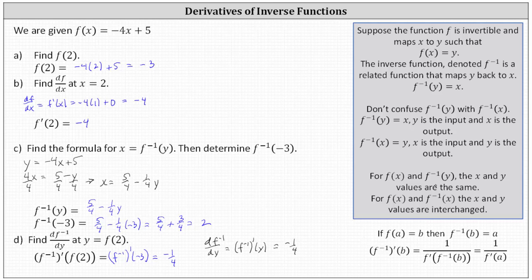For f of x and f inverse of y, the x and y values remain the same. For f of x and f inverse of x, the x and y values are interchanged — the outputs of f of x, which are y, are reassigned to x and become the input for f inverse of x. Finally, we have the relationship discovered in our problem: the slopes of the tangent lines and derivative function values of f of x and f inverse of x are reciprocals of one another at corresponding points. So if f of a equals b, then f inverse of b equals a, and f inverse prime of b is equal to one divided by f prime of a.